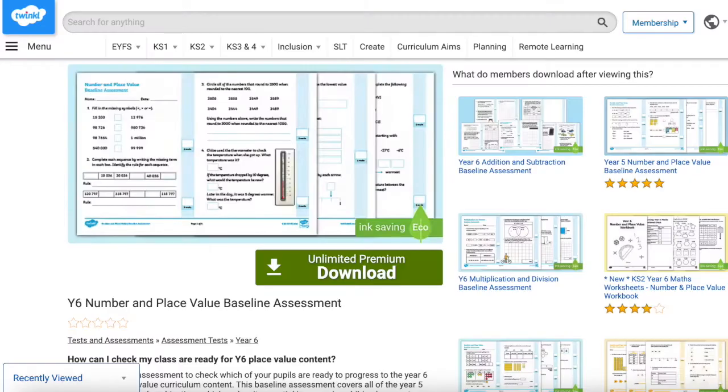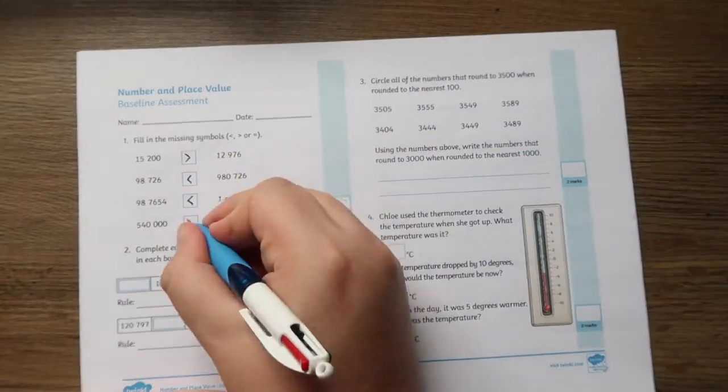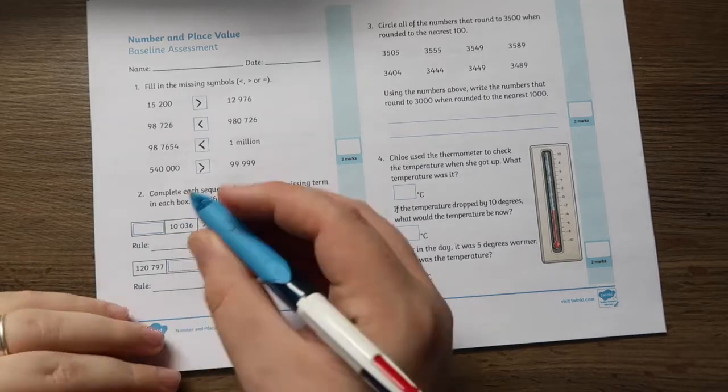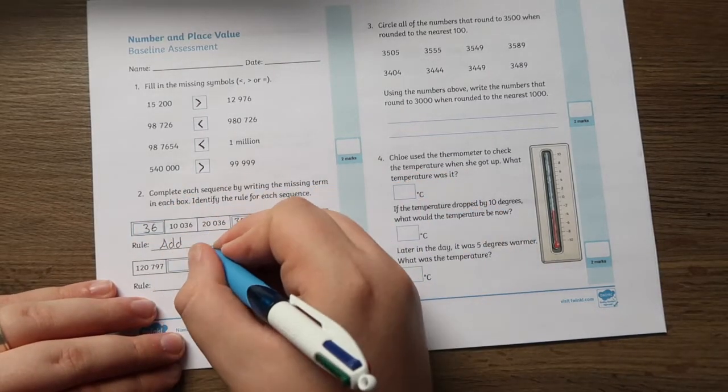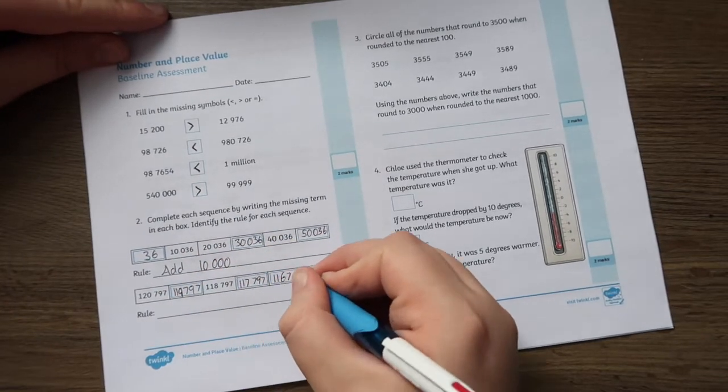The year six number and place value baseline assessment is a fantastic resource which allows you to see where your children are at the start of the year. Use this thorough assessment to check which of your pupils are ready to progress to the year six number and place value curriculum content.